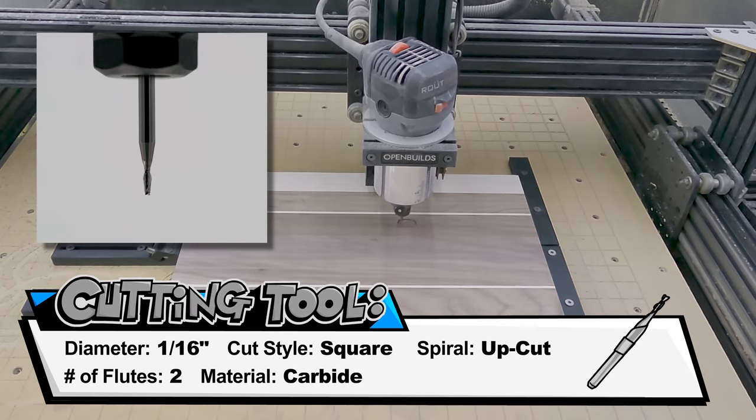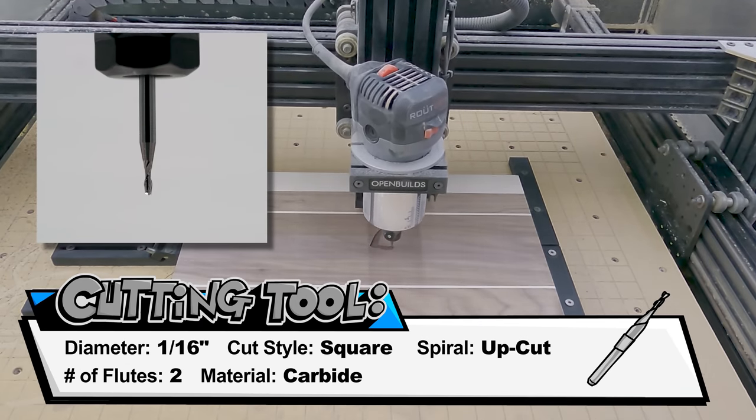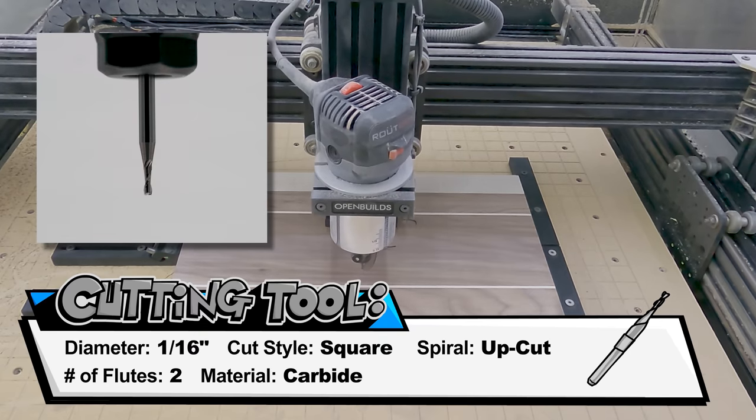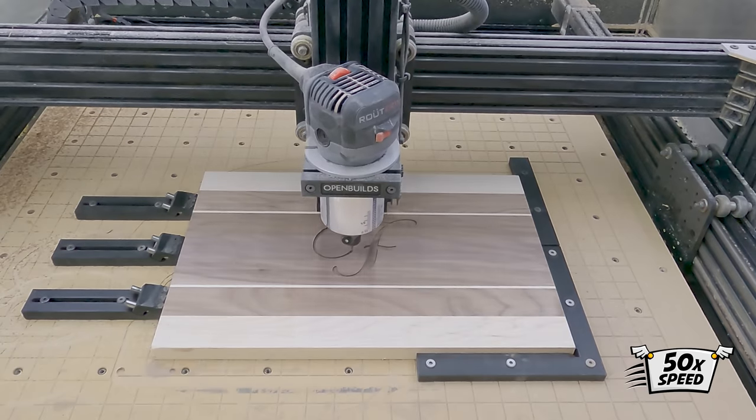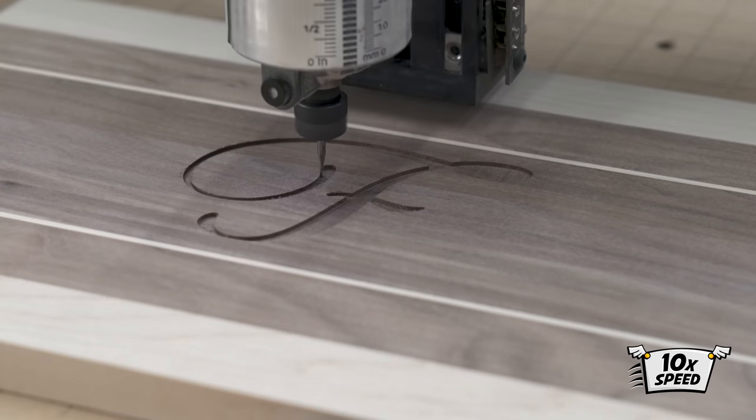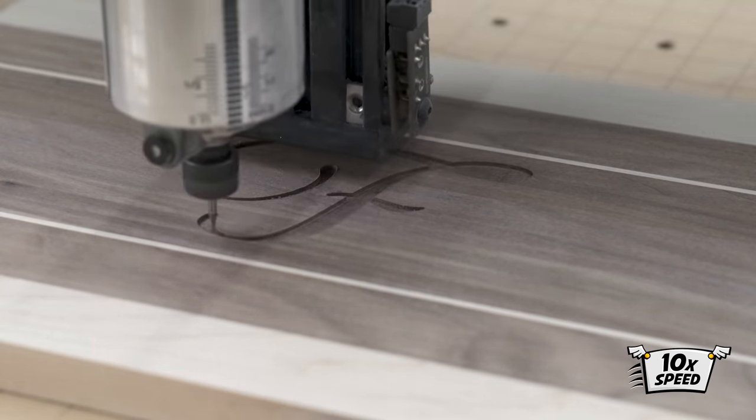This 1/16th inch end mill is an up cut bit because I want a nice surface finish for the inlay to be glued to. This is carving at a depth a little less than 1/16th of an inch. I want the inlay to stick out just a little bit so that I can sand it down for the perfect finish.